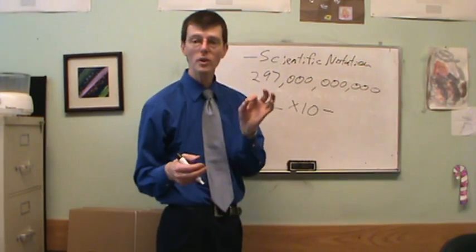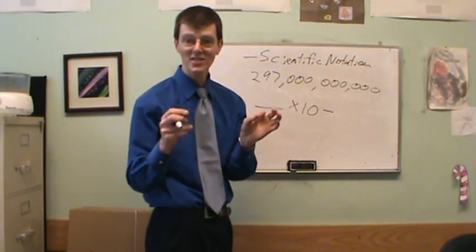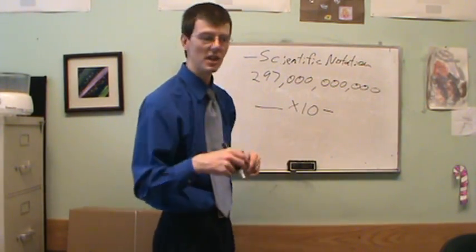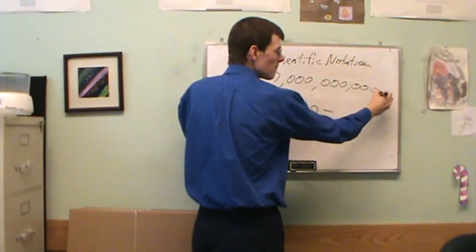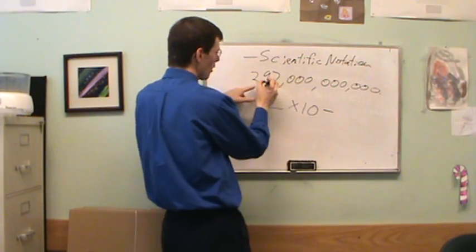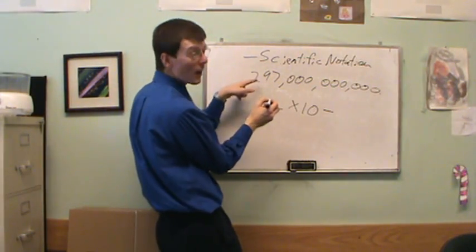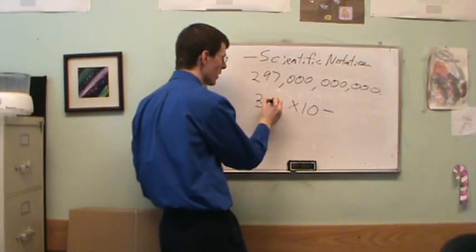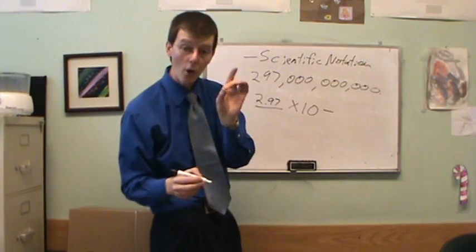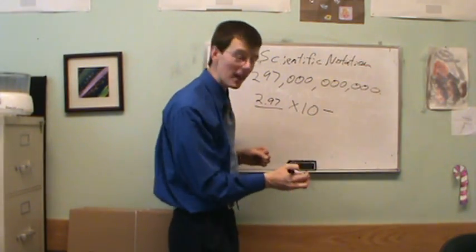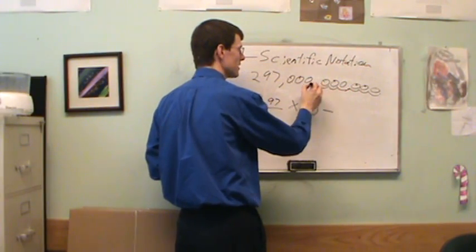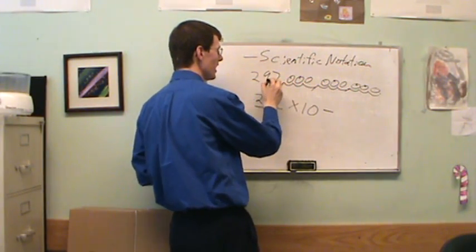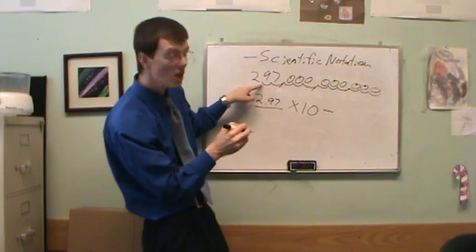The first number must always be somewhere between 1 and 10. Can't be as much as 10, and the smallest it can be is 1. So what I need to do is I need to take the decimal point and move it all the way over to between 1 and 10. This has got to become 2.97. And the power of 10 will tell me how many decimal places I have to move. I have to move 1, 2, 3, 4, 5, 6, 7, 8, 9, 10, 11 decimal places.